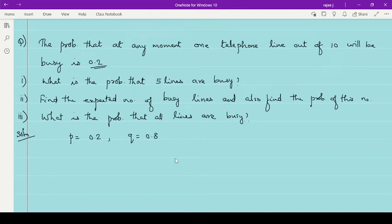P is 0.2, Q is 0.8. Now the first case, and here obviously N is equal to 10. So N is 10. Then what is the probability that 5 lines are busy?